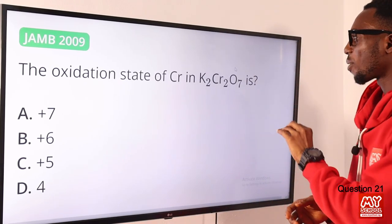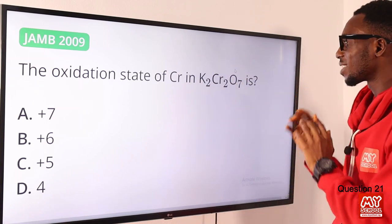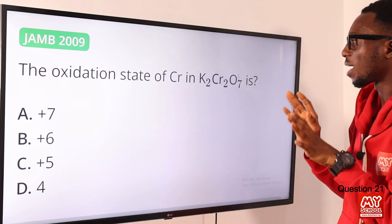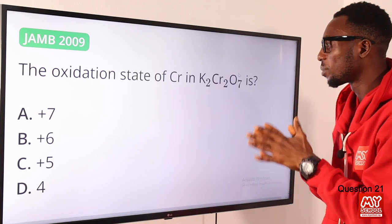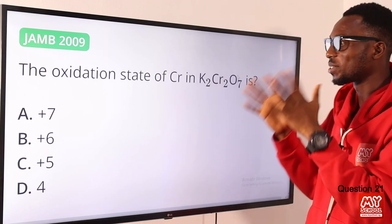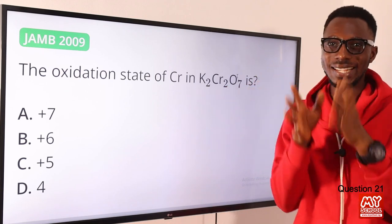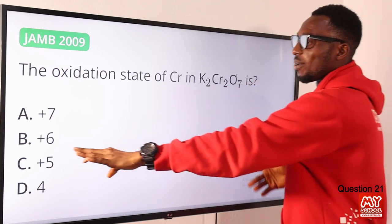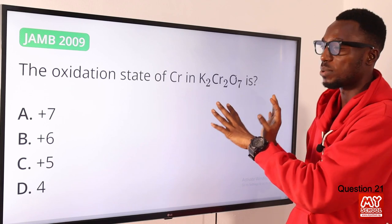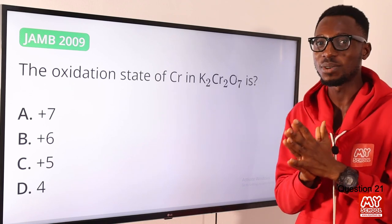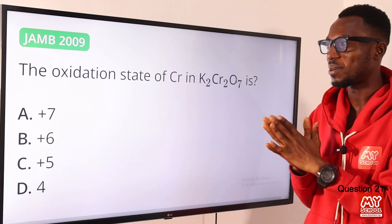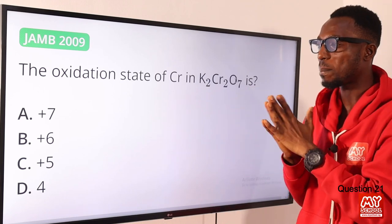Question 21: the oxidation state of chromium in K₂Cr₂O₇. This compound is potassium heptaoxodichromate(VI), or potassium dichromate(VI). The name itself — chromate(VI) — tells us the oxidation state of chromium is +6. So the correct option is option B: +6. Detailed calculations are also available on the MySchool website — search for CHEM 2009.